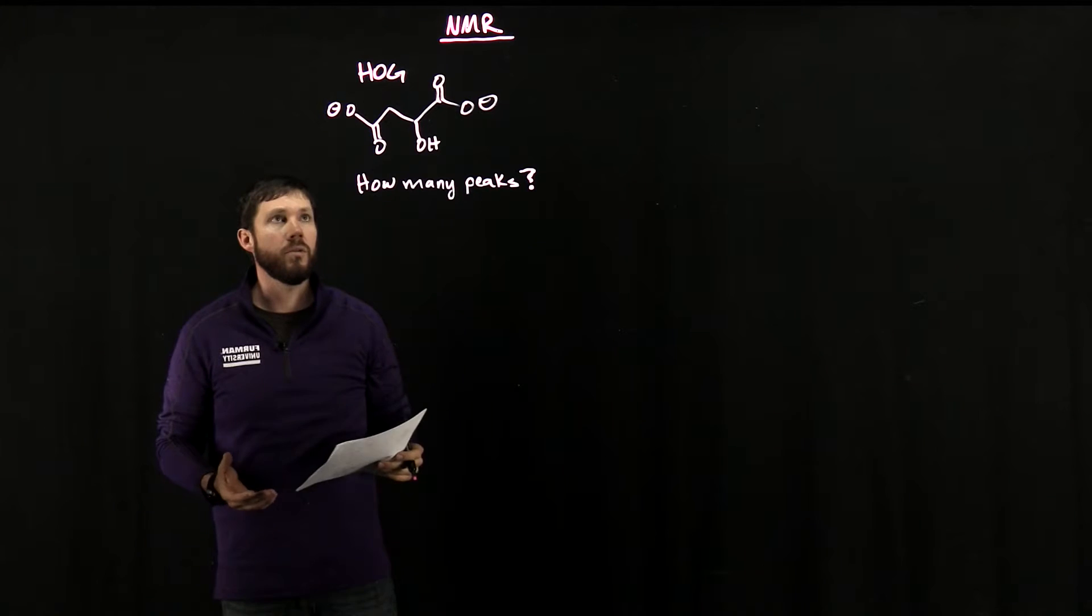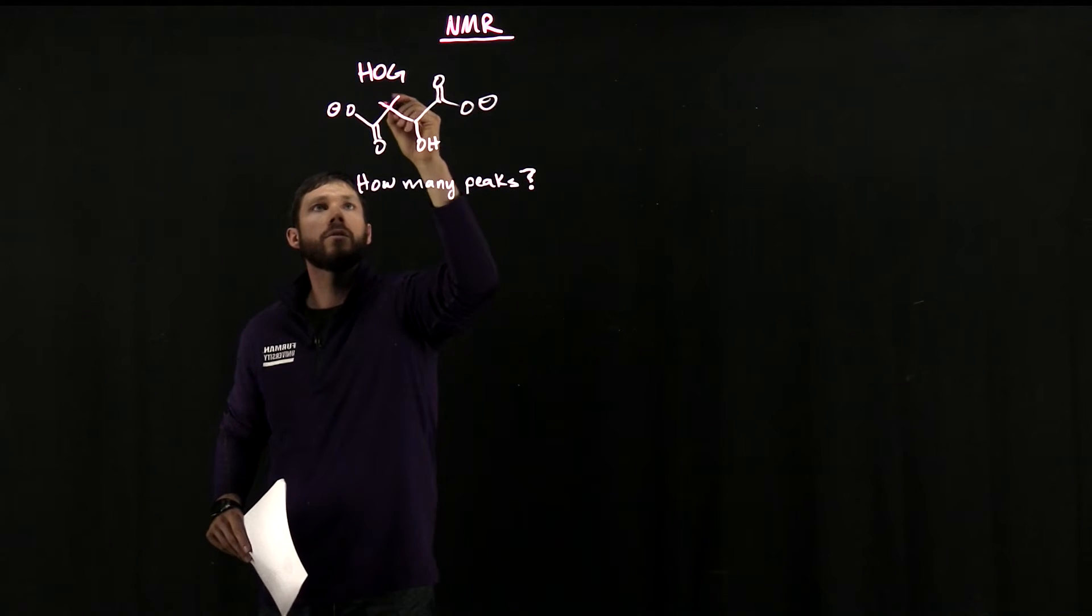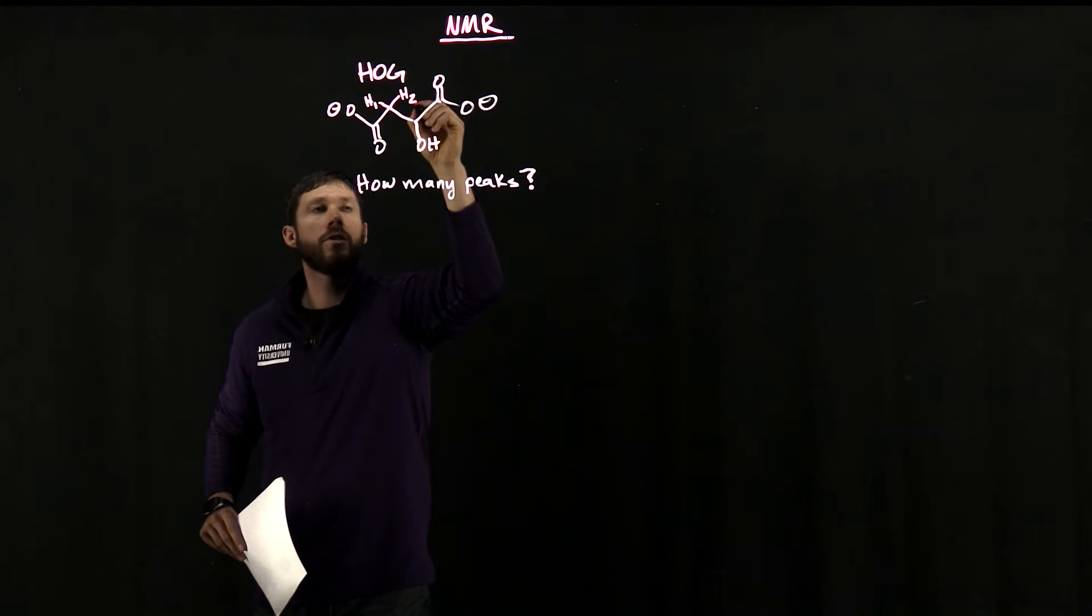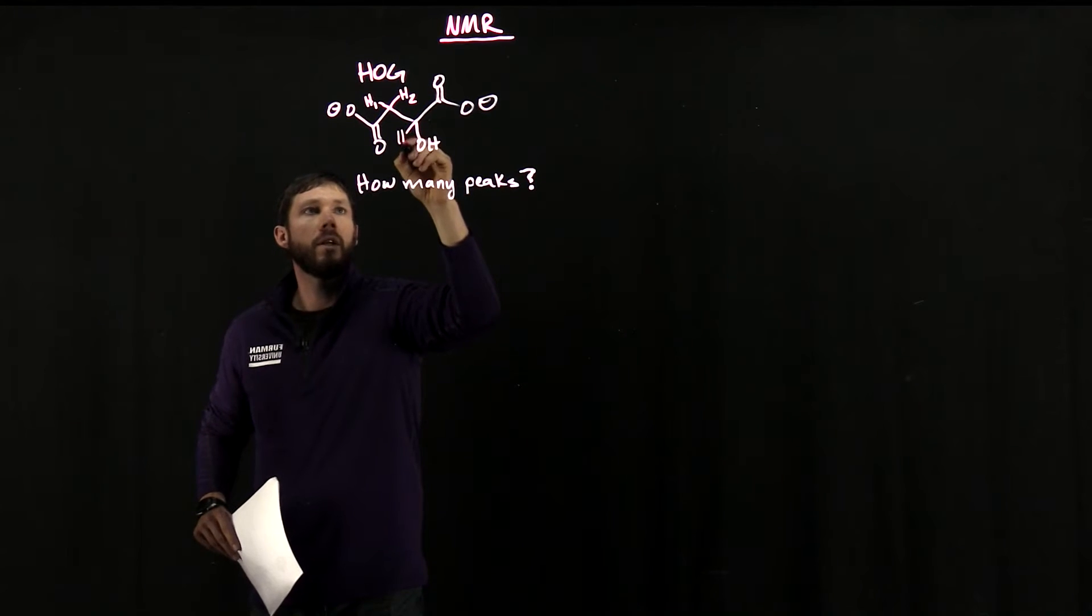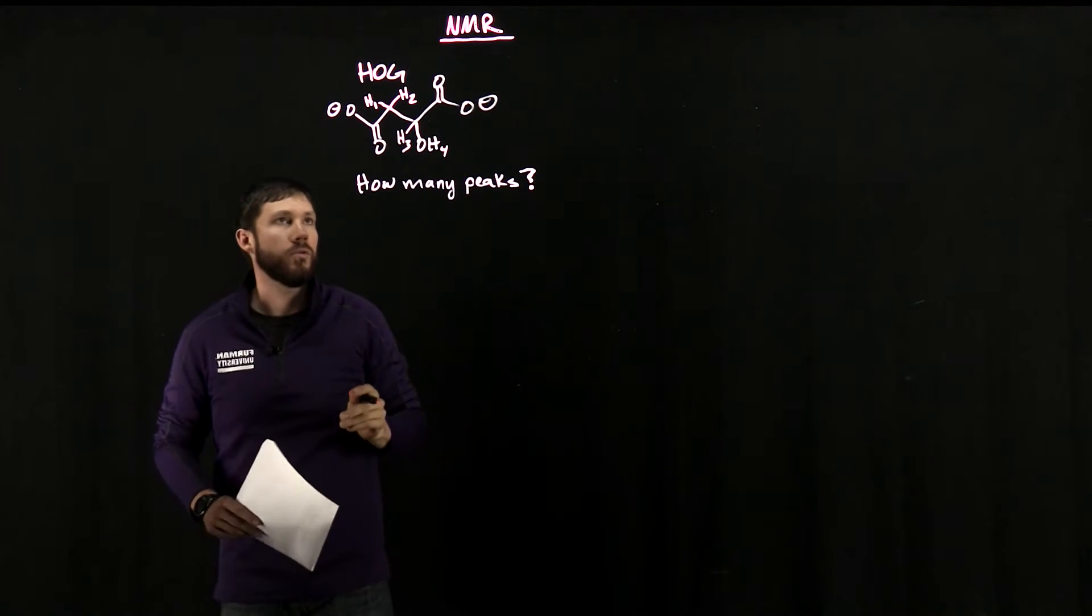The first thing we need to do is go through and identify all the hydrogens in this molecule. So we've got two here, I'll denote H1 and H2. We have another one over here called H3, and then we have one on this alcohol we'll call H4.